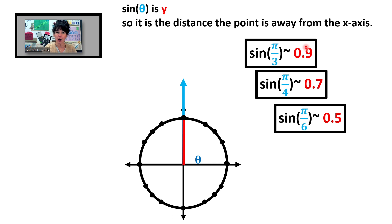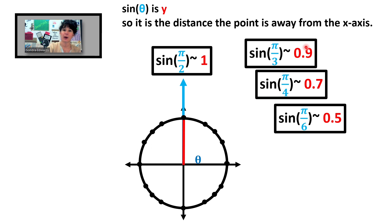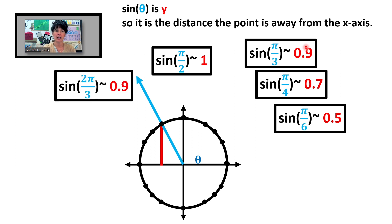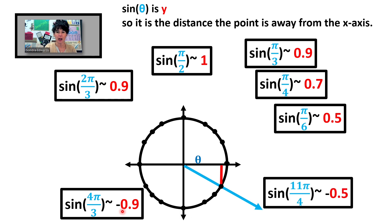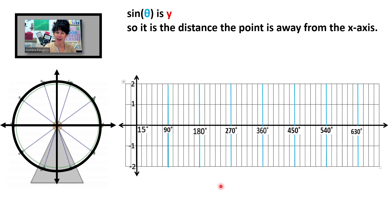At π/2, we are 1 above the x-axis, so sine of π/2 is 1. Continuing around: sine of 2π/3 is about 0.9, and at 4π/3 we're below the x-axis a distance of 0.9, so the answer is negative 0.9, which is −√3/2. At 330 degrees (11π/6) we are below the x-axis a distance of about 0.5. If the sine of theta is the y-coordinate — how far off the x-axis we are — let's look at this with a Ferris wheel example.